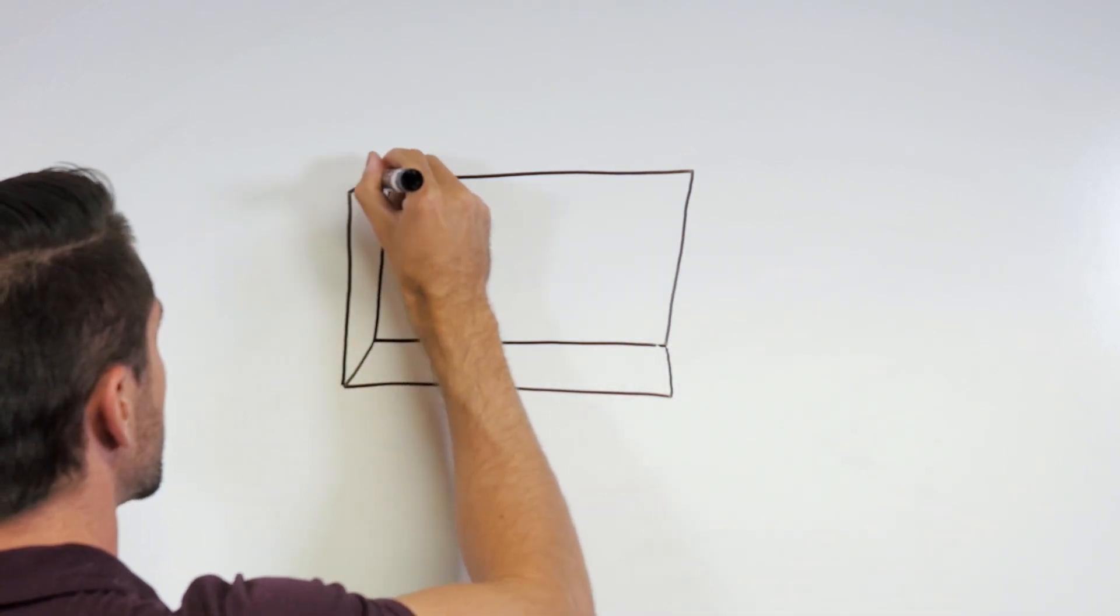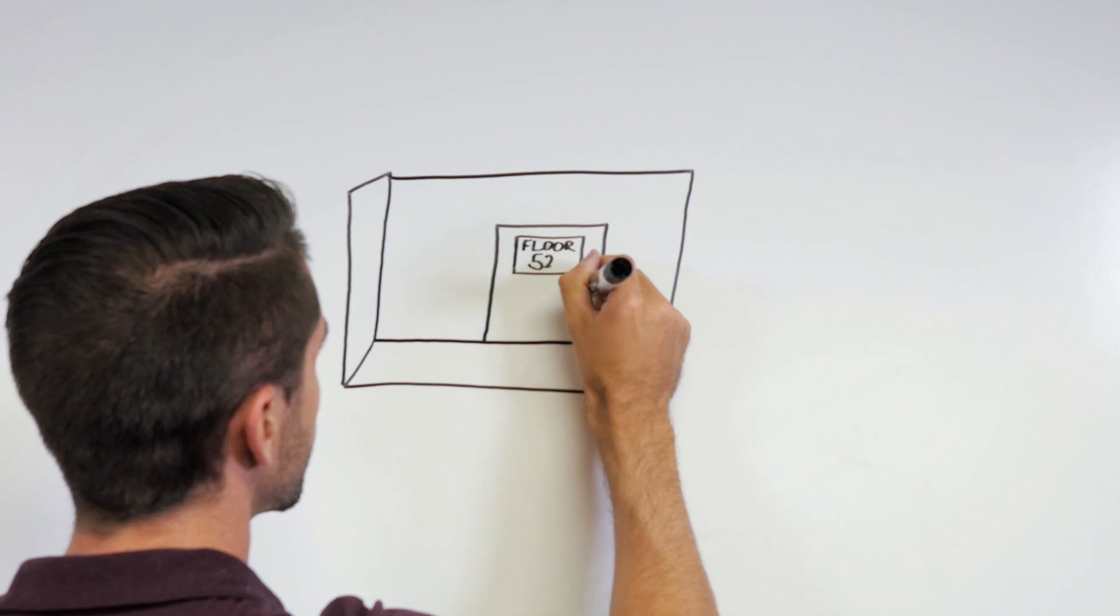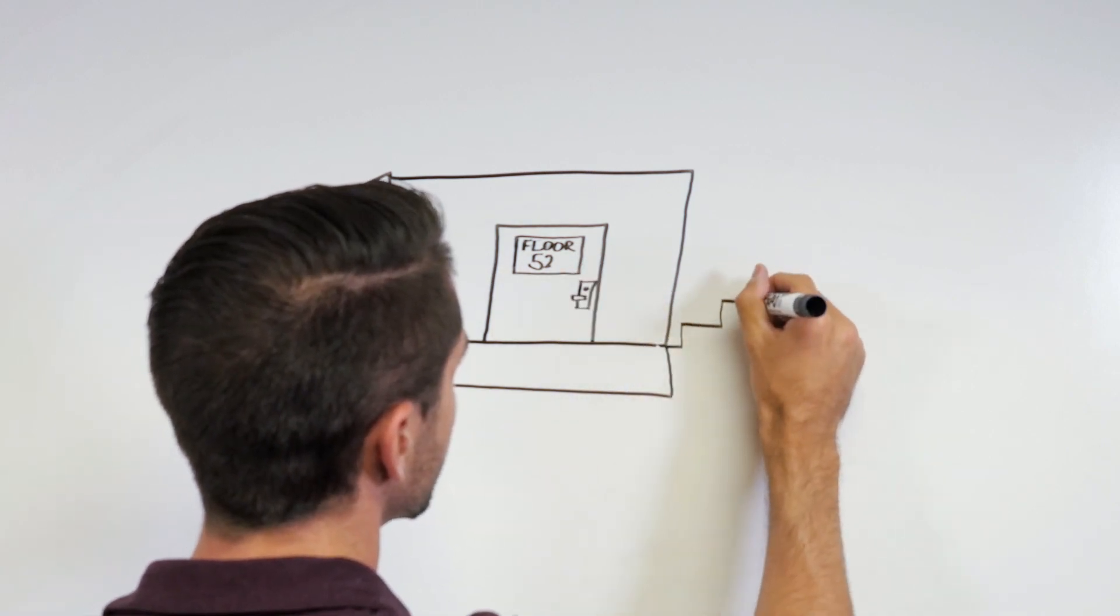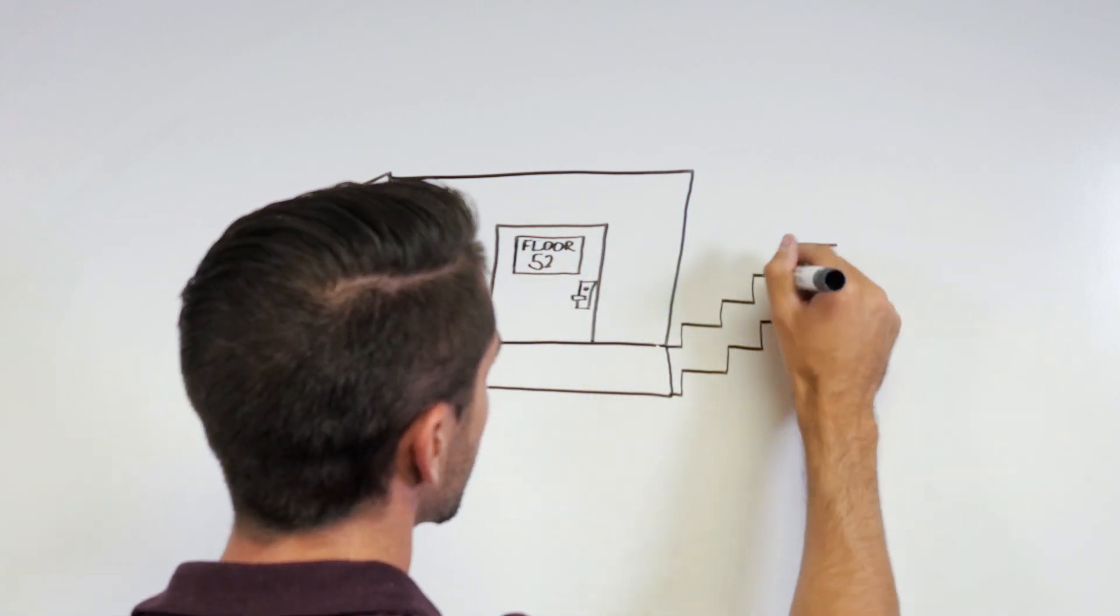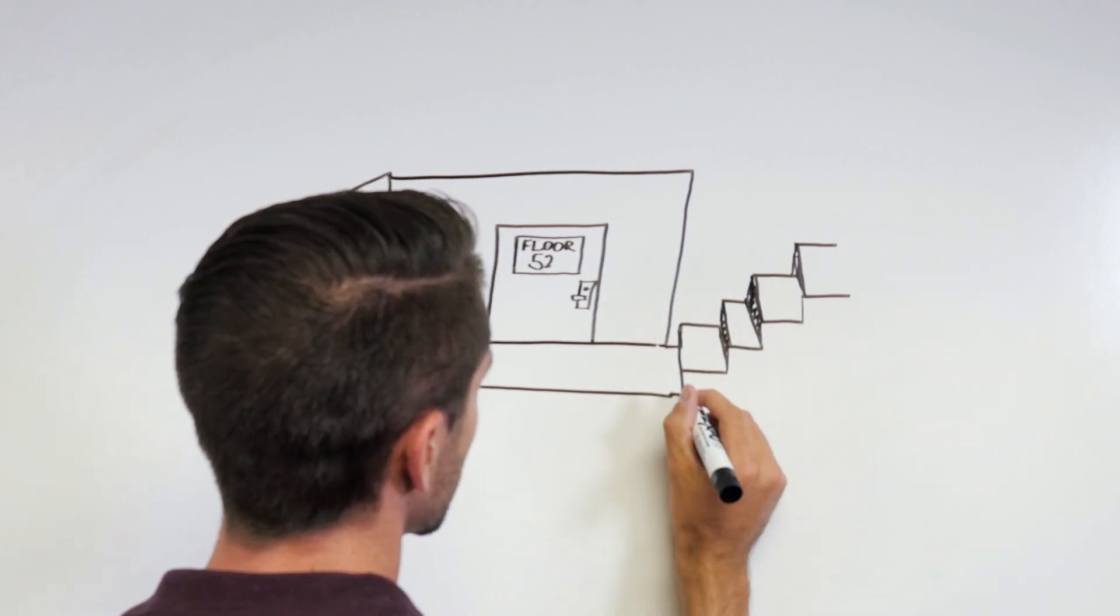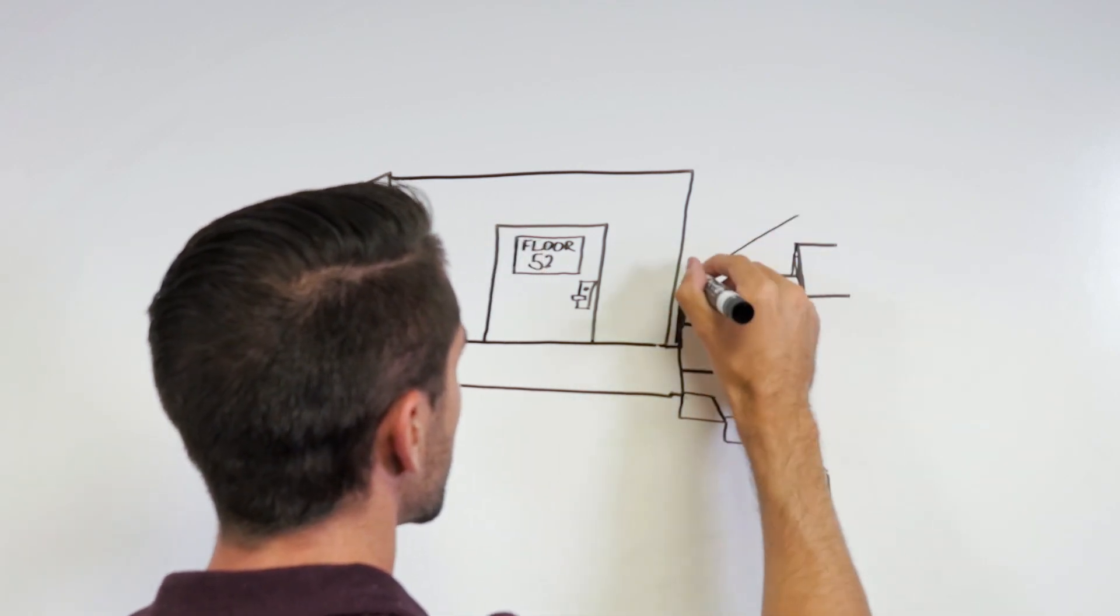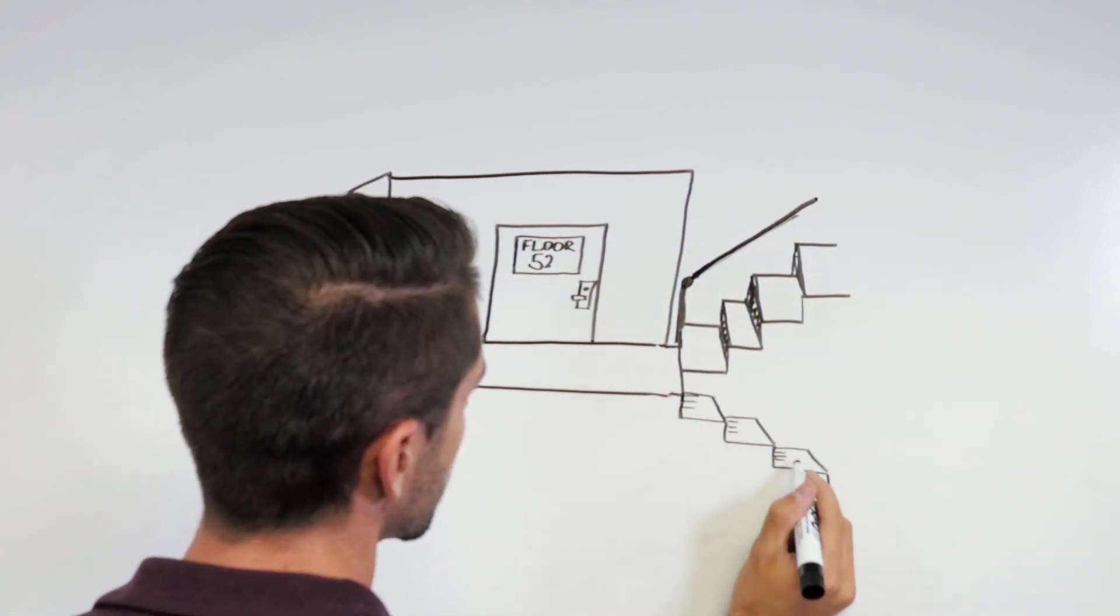What if the stairwell doors must have panic hardware on them? One cannot use electric latch retraction devices for the stairwell re-entry doors because those devices lock when power is removed. Most exit device manufacturers offer an electrified trim that works similar to the electromechanical lock sets and can be either fail safe or fail secure.